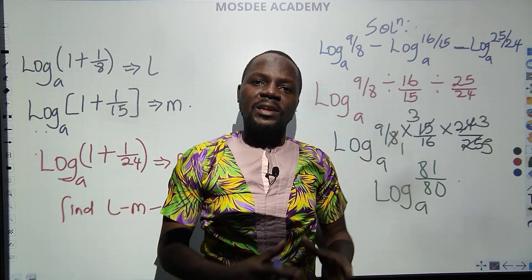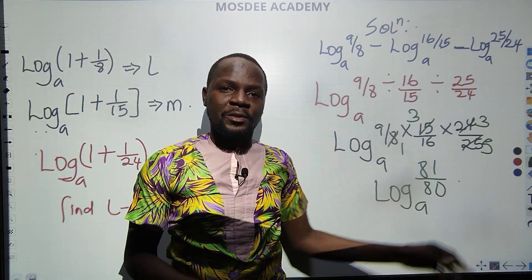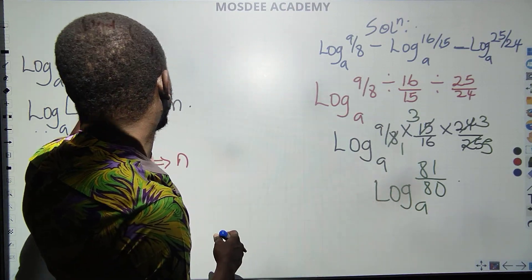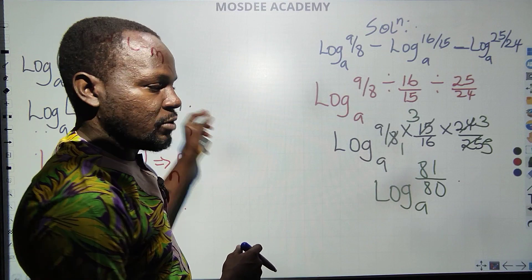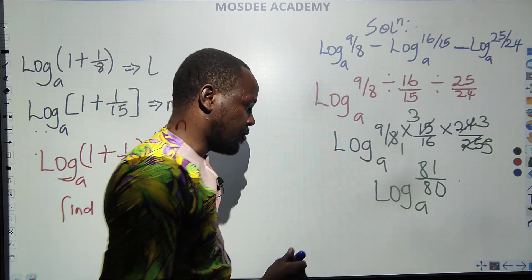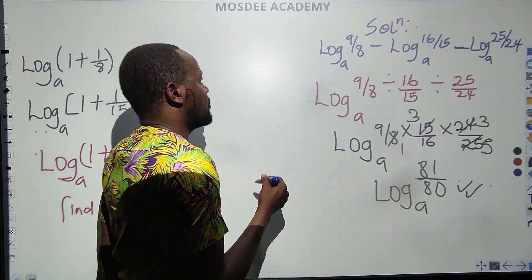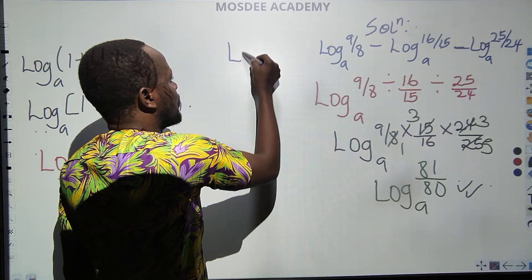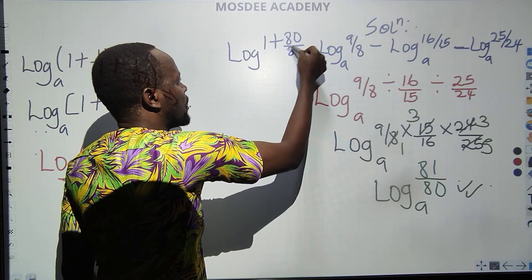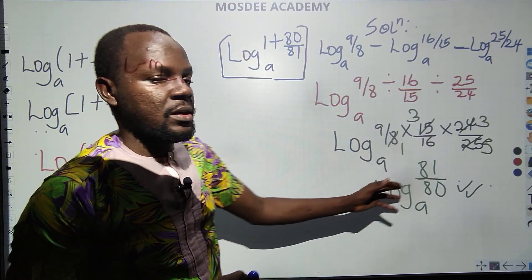Because in the beginning you have 1 plus 1 over 8, so it is expected of you in most of your exams that 81 over 80, just like 9 over 8 is 1 plus 1 over 8, so 81 over 80 would be 1 plus 1 over 80. So it is expected of you to finalize your answer, this is correct, or in another way, by writing in this format as log of 1 plus 1 over 80 to base A. So any of these two, depending on the nature of the examination you are writing, are both correct.